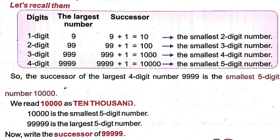The largest three-digit number is 999. The successor of 999 is 999 plus 1, which equals 1000. So 1000 is the smallest four-digit number. That means the successor of the largest three-digit number is the smallest four-digit number.